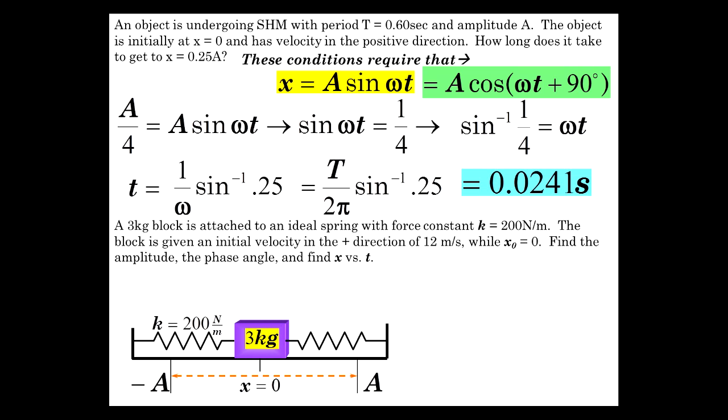Three kilogram block attached to an ideal spring, 200 newtons per meter. And we're going to give the block an initial velocity of 12 meters per second. x0 is equal to 0 again. So for this problem, we're going to find the amplitude, phase angle, and the equation x versus t.